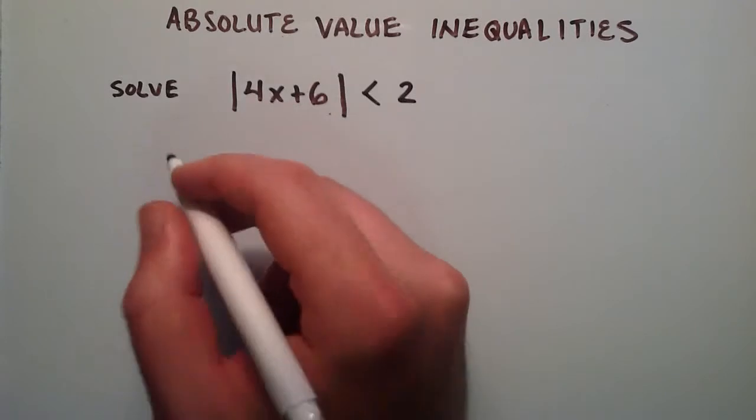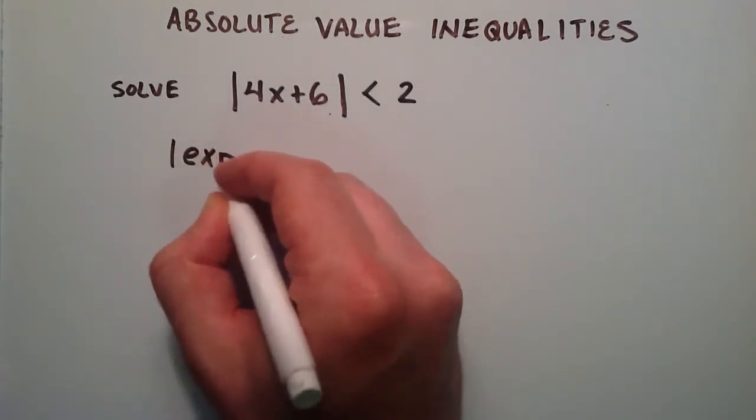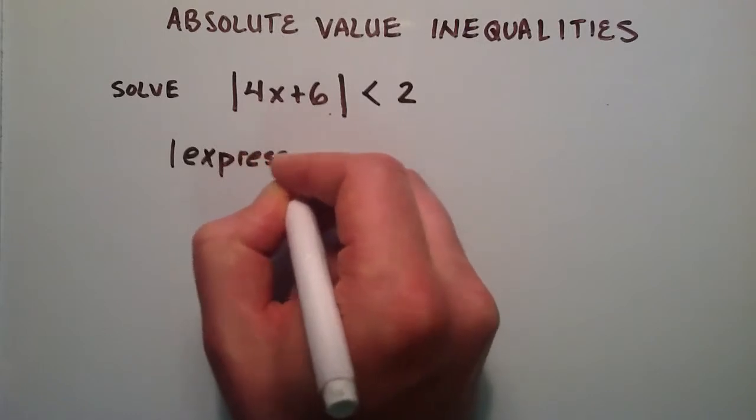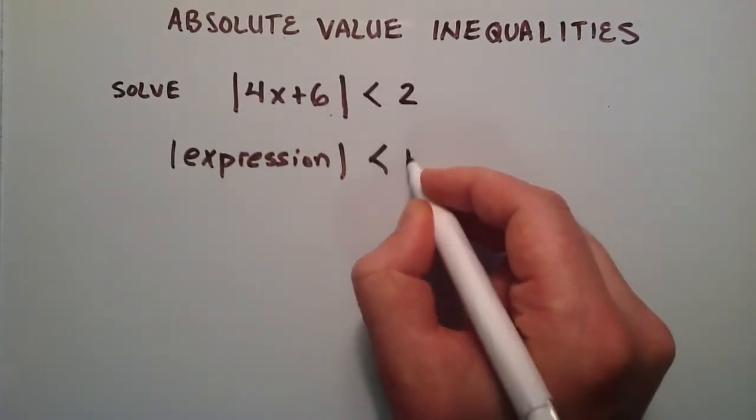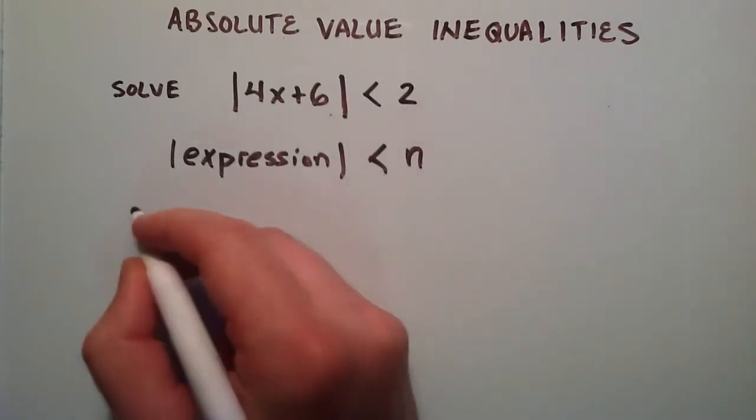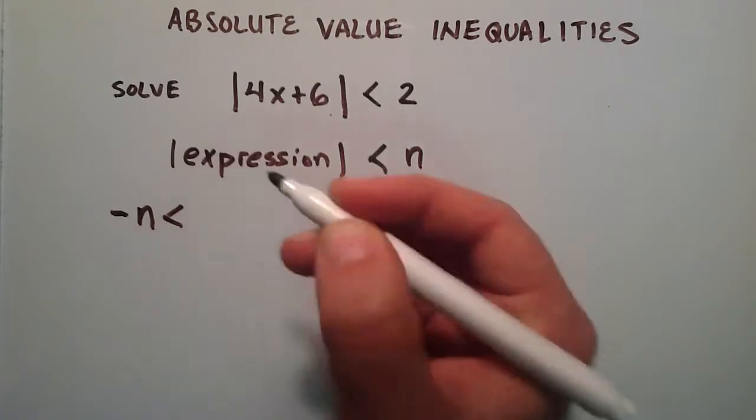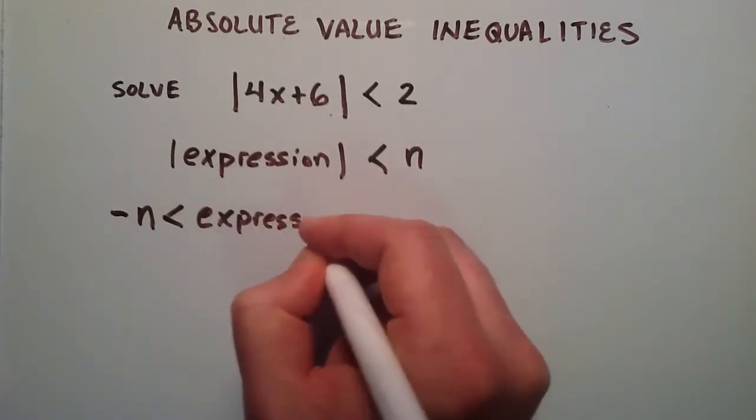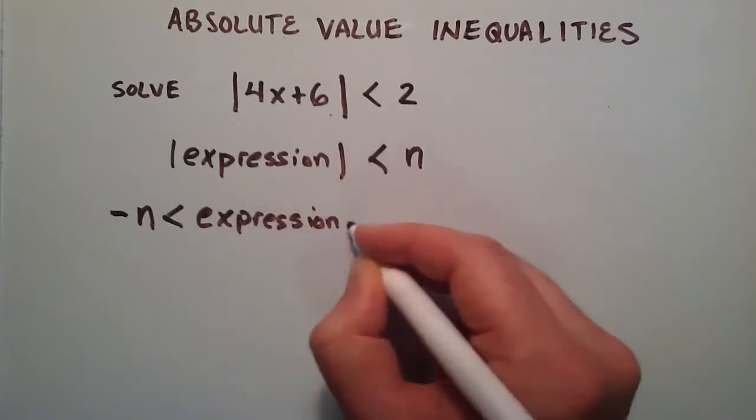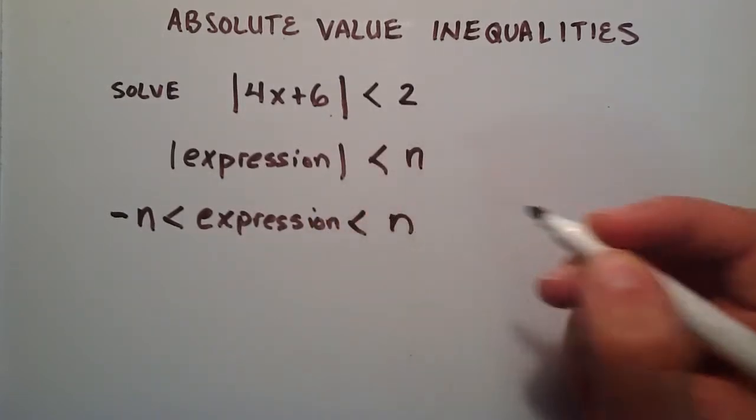In the previous tutorial, Lesson 50, I mentioned that if we had the absolute value of some expression, and that was less than some number n, then the solution is negative n is less than the expression, which is less than positive n. In our case, our expression is 4x plus 6.